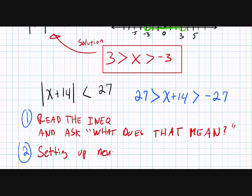Notice how we turned this one inequality into a compound inequality which has two parts. So it's kind of like we have two different inequalities. We're satisfying two at the same time. We're satisfying x plus 14 less than 27, and we're also satisfying x plus 14 greater than negative 27.